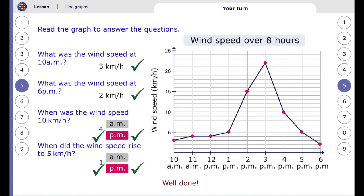And here are the answers. So you can see the wind speed at 10 a.m. was 3 km per hour. At 6 p.m. it was 2 km per hour. The wind speed was 10 km per hour at 4 p.m. And it rose above 5 km per hour at 1 p.m.